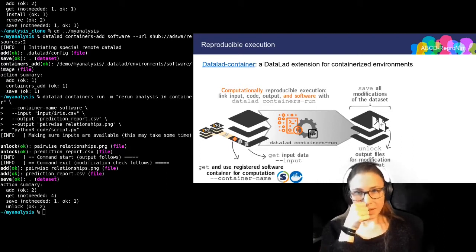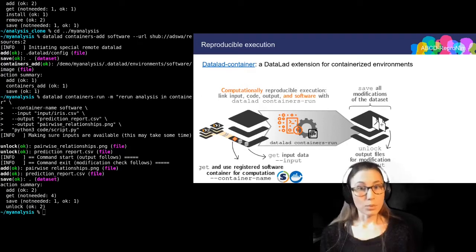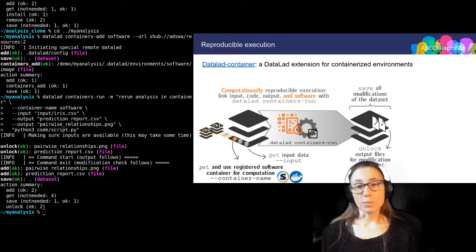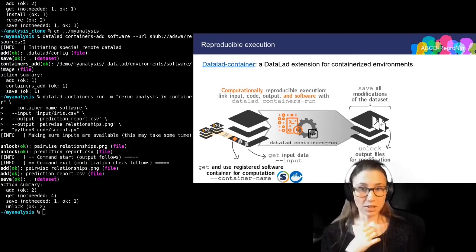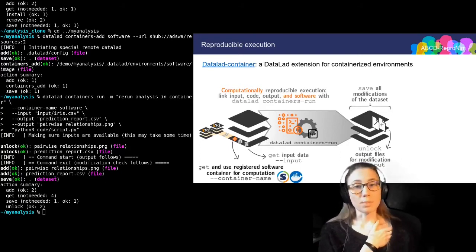Now, if a run or a rerun does not lead to any modification in the dataset, there will be no entry in the history because there's nothing to save. So, for example, you can check if your analysis yields identical results on two different computers just by rerunning them and seeing if something is saved and thus changed. You could also do this after code refactoring to see if everything still works as expected.